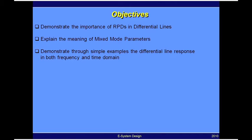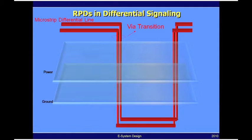Let me start by using the test vehicle from the previous segment, which was a microstrip to microstrip via transition. All that is different on this slide is that instead of using single-ended lines, I now have differential lines.